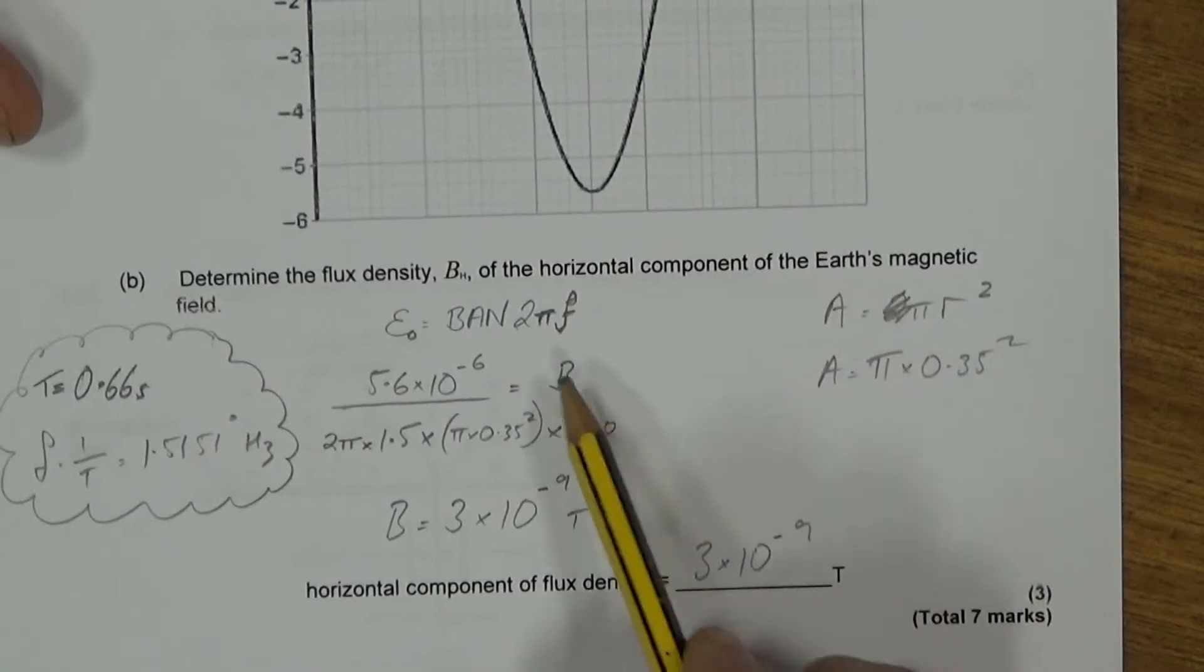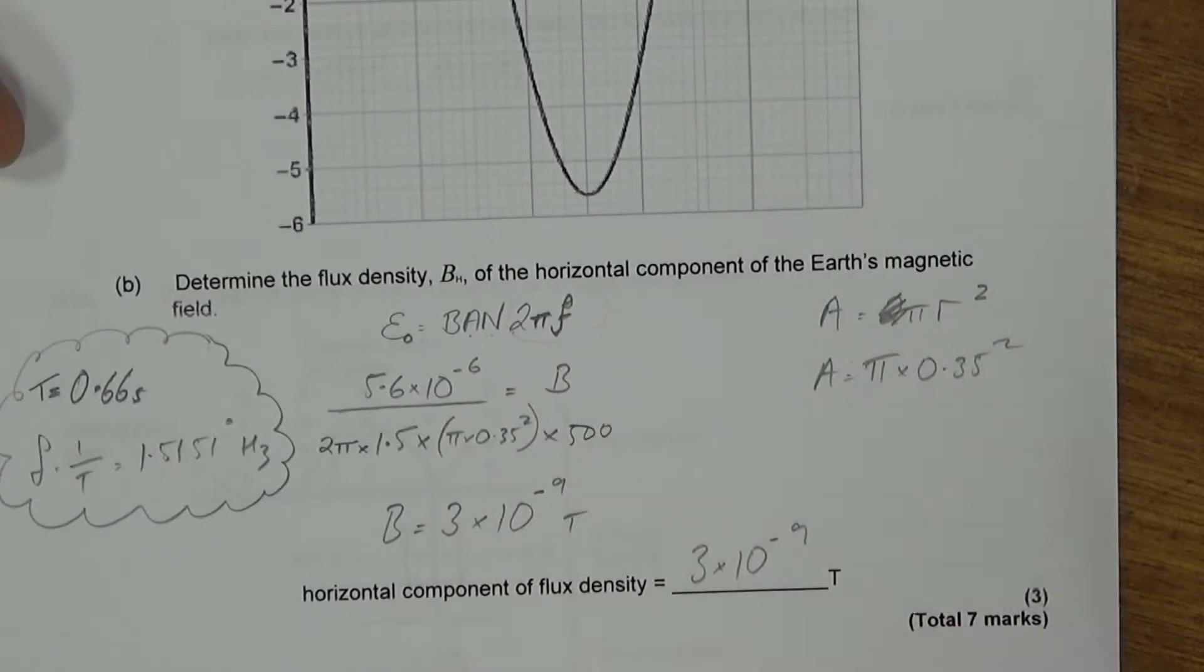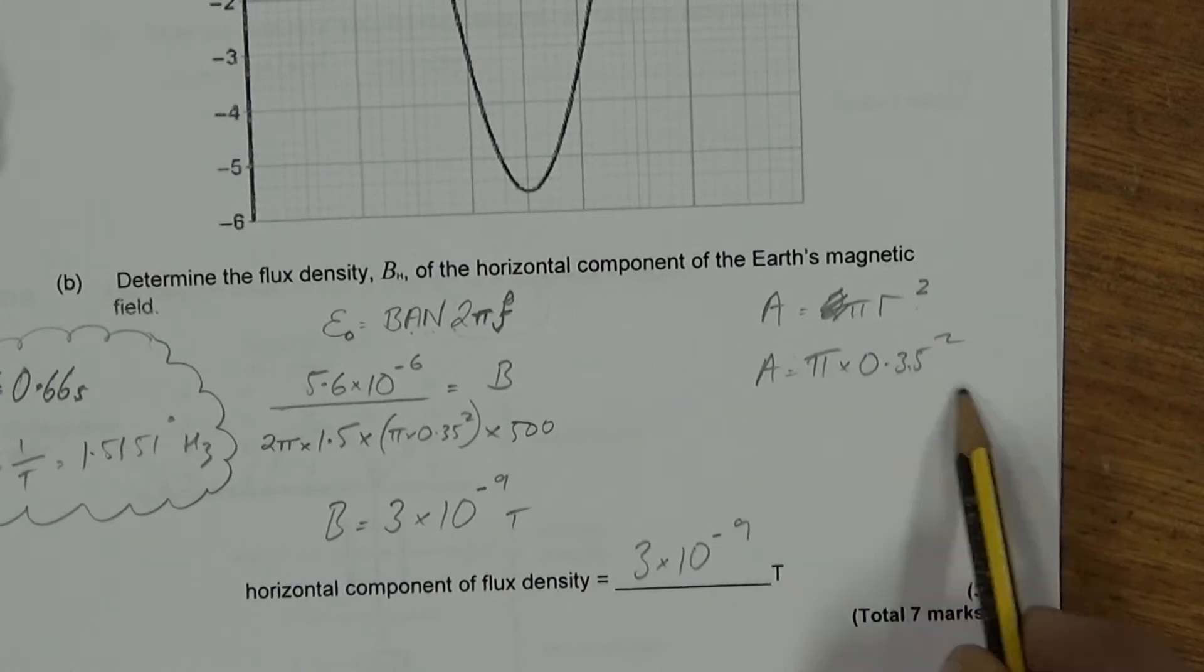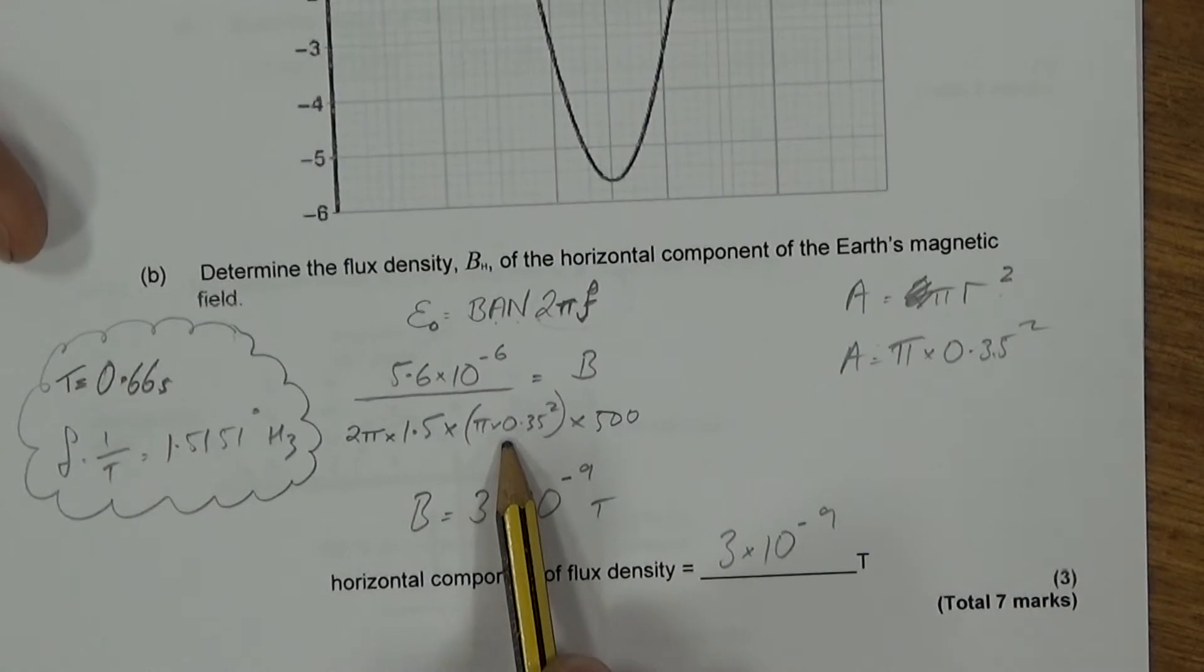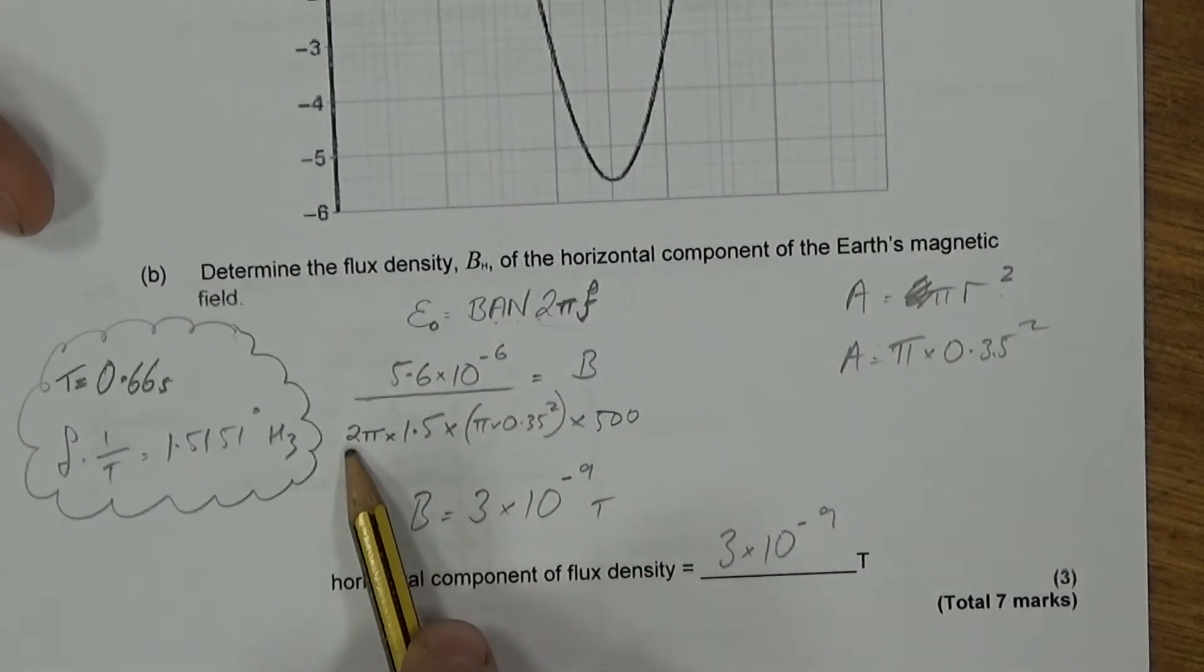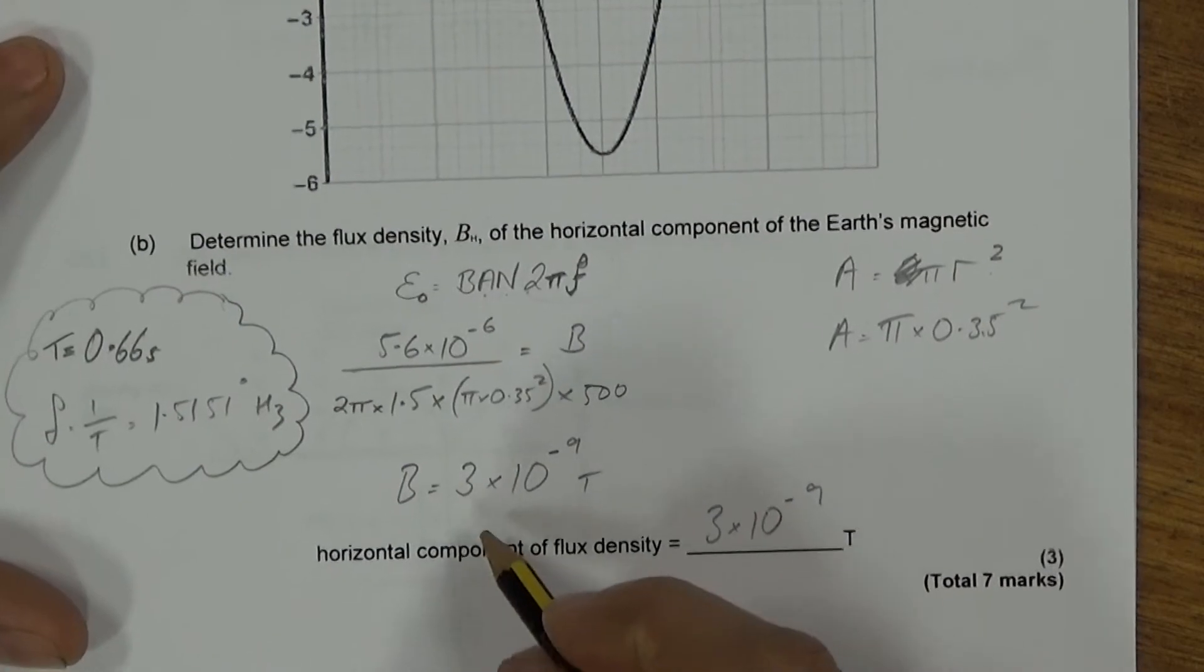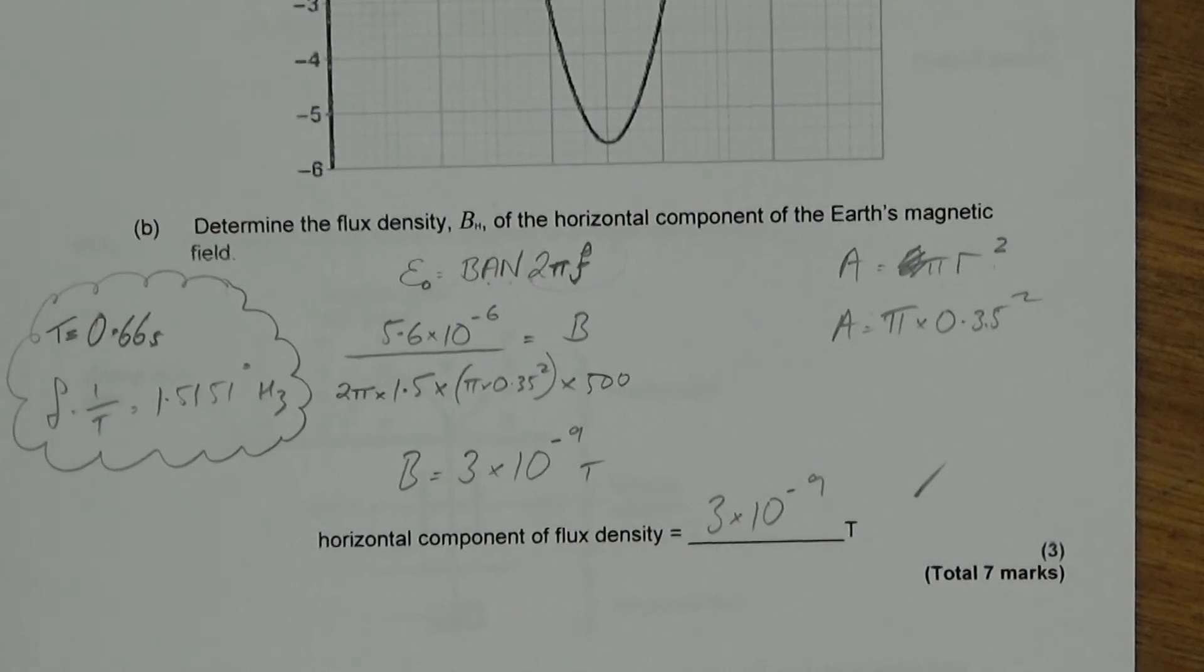Then we're just going to divide through B by the area times by the number of turns times by 2πF to find out what the flux density is. So, first of all, we calculate the area. Well, it's πr². That gives us whatever it does. Well, I actually don't calculate that. It's just saying what the area is there. Shove that into this bit here. We've got the field divided by 2π times by 1.5 times by the area times by the number of coils. And that gives us 3.3 times 10⁻⁵ Tesla. And that is the end of question 10.